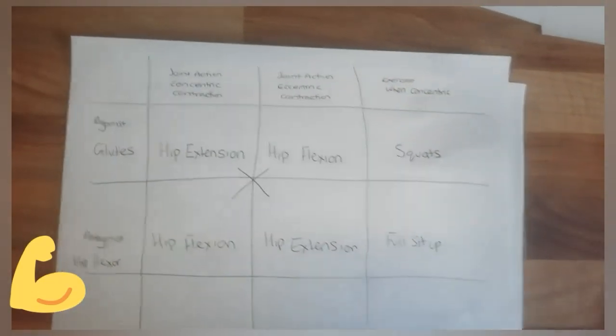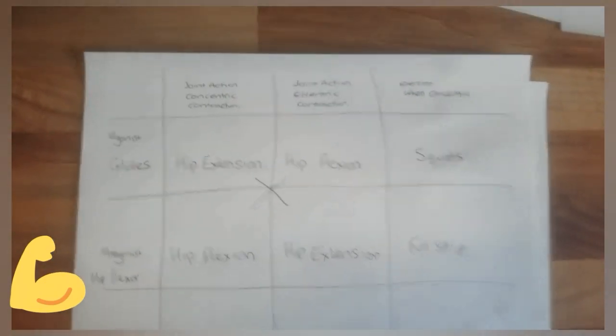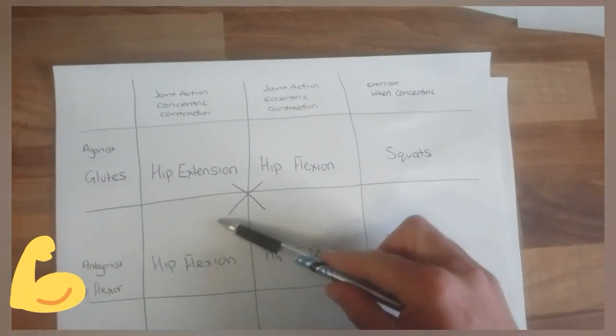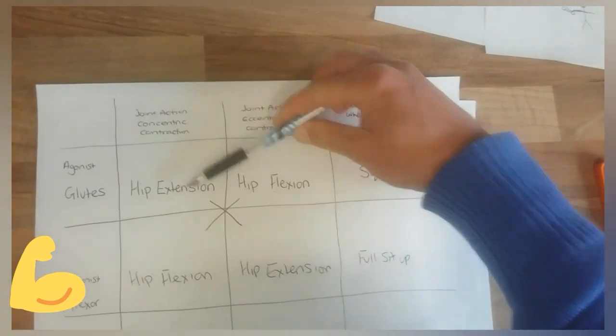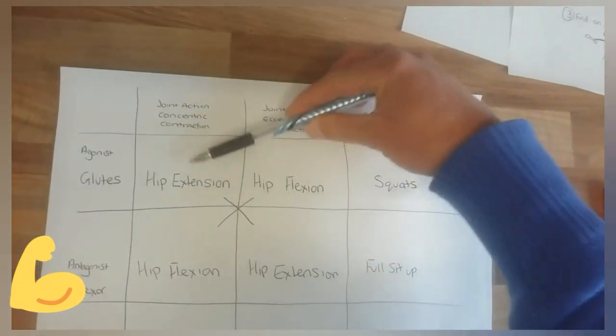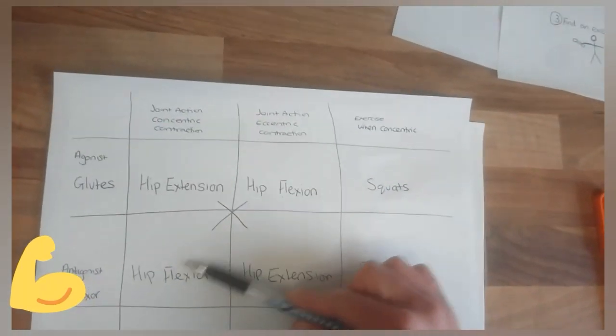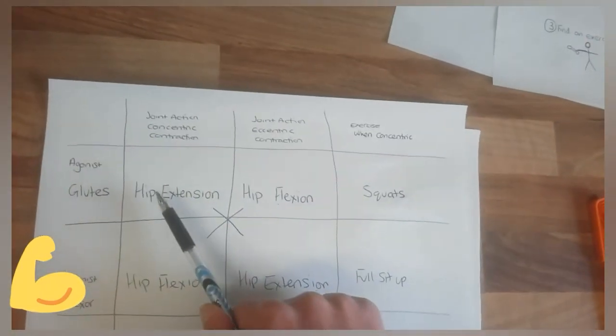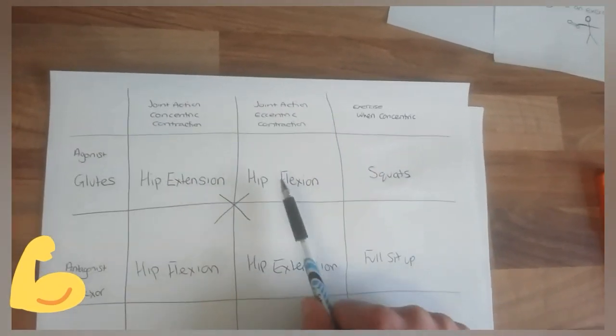It can look a bit confusing, especially when you work it out. But my main point here is that you've got this cross in the middle whereby hip extension and hip extension will be the concentric eccentric pairing. And you can see how they map across. So you need to know what is the opposite hip extension? That's hip flexion.